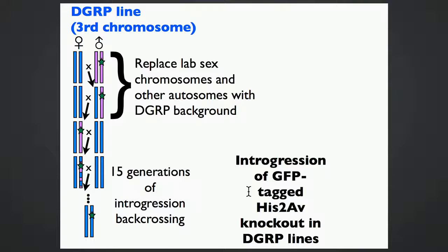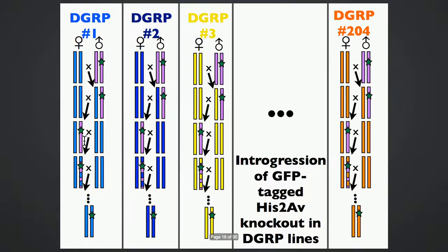The challenge was to get this GFP-tagged His2AV knockout into the backgrounds of the 200-plus DGRP lines. We do this through a series of crosses — showing only what's happening on the third chromosome — where we can replace all lab sex chromosomes and other autosomes with DGRP background using balancer chromosomes. We then replace the remaining lab background slowly with DGRP background using 15 generations of introgression crosses, selecting for females with the GFP mutation and back-crossing to DGRP males each generation. This took quite a while, but we did it for all 200-plus lines.